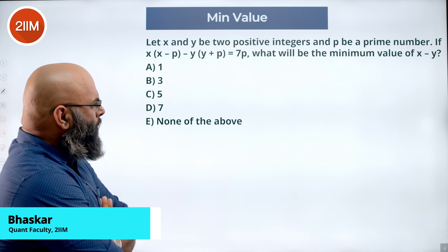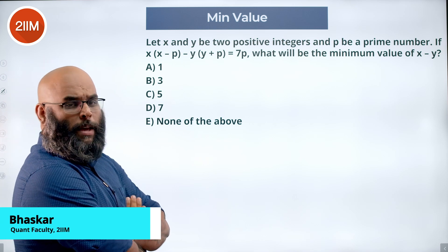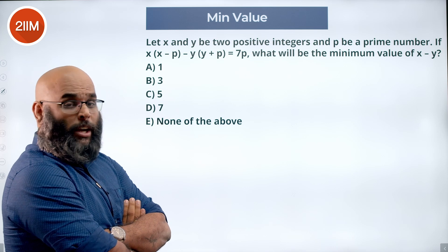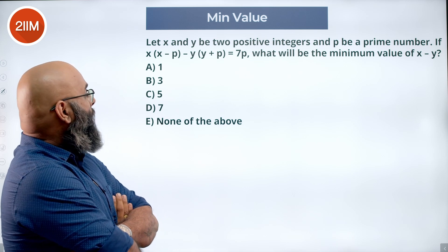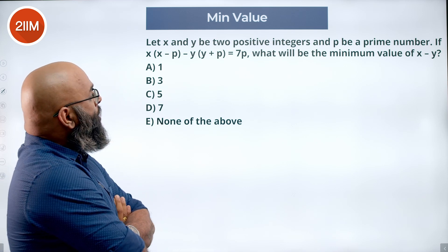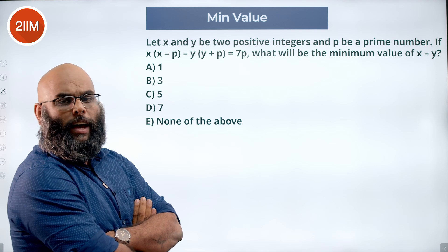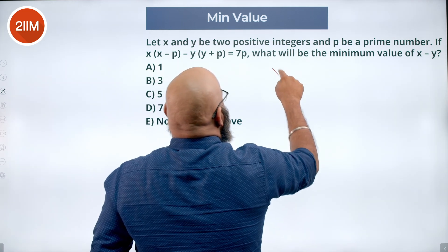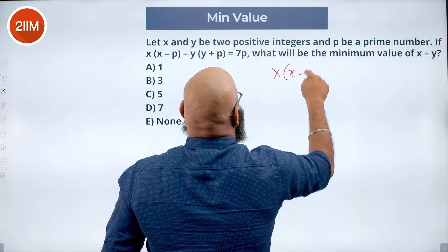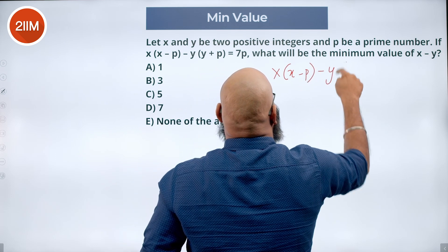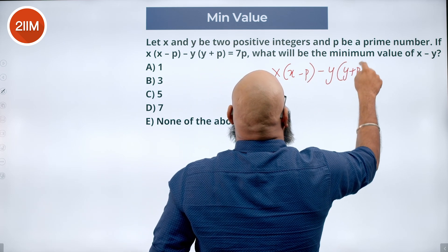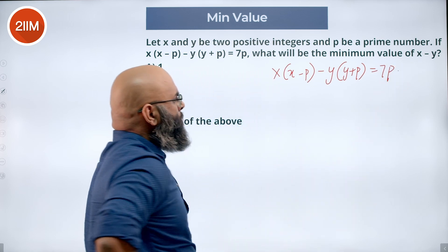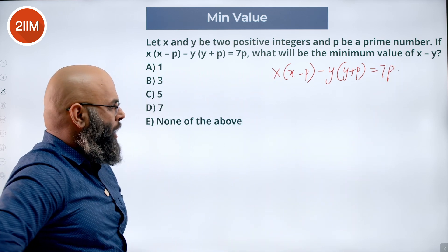Let x and y be two positive integers and p be a prime number. If x into (x minus p) minus y into (y plus p) is equal to 7p, what will be the minimum value of x minus y? So it is given that x(x minus p) minus y(y plus p) equals 7p, and we need to find the minimum value of x minus y.